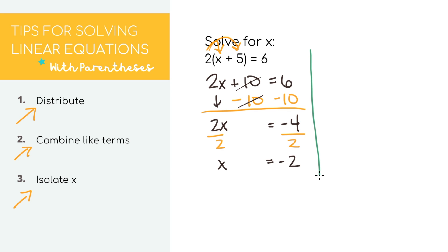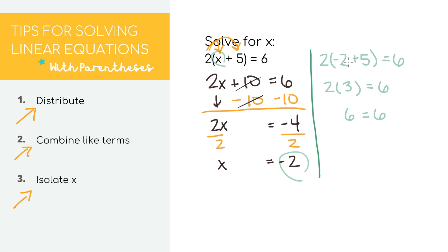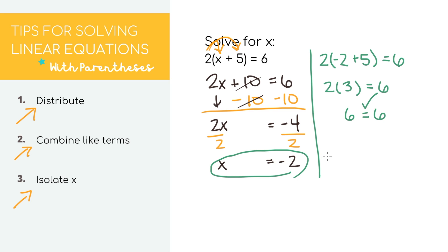To check our answer, let's plug in negative 2 as x in the original equation. We'll get that 6 equals 6, which is true, so we know that x equals negative 2 is the right answer.